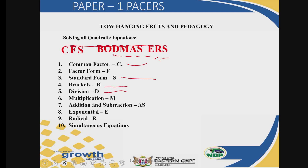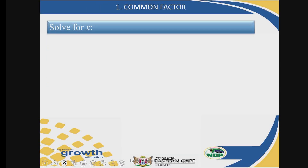So let us look at them now one by one, starting from the first one, which is the common factor method. Look at number one. It says: solve for x, and you are given the equation x squared plus 5x is equal to 0. Every time, grade 12 technical mathematics learners, whenever you are required to solve a quadratic equation — or even if it is not a quadratic equation — once you are required to solve, the very first thing you need to do is ask: is there a common factor out of what is given to me? So look at this expression.